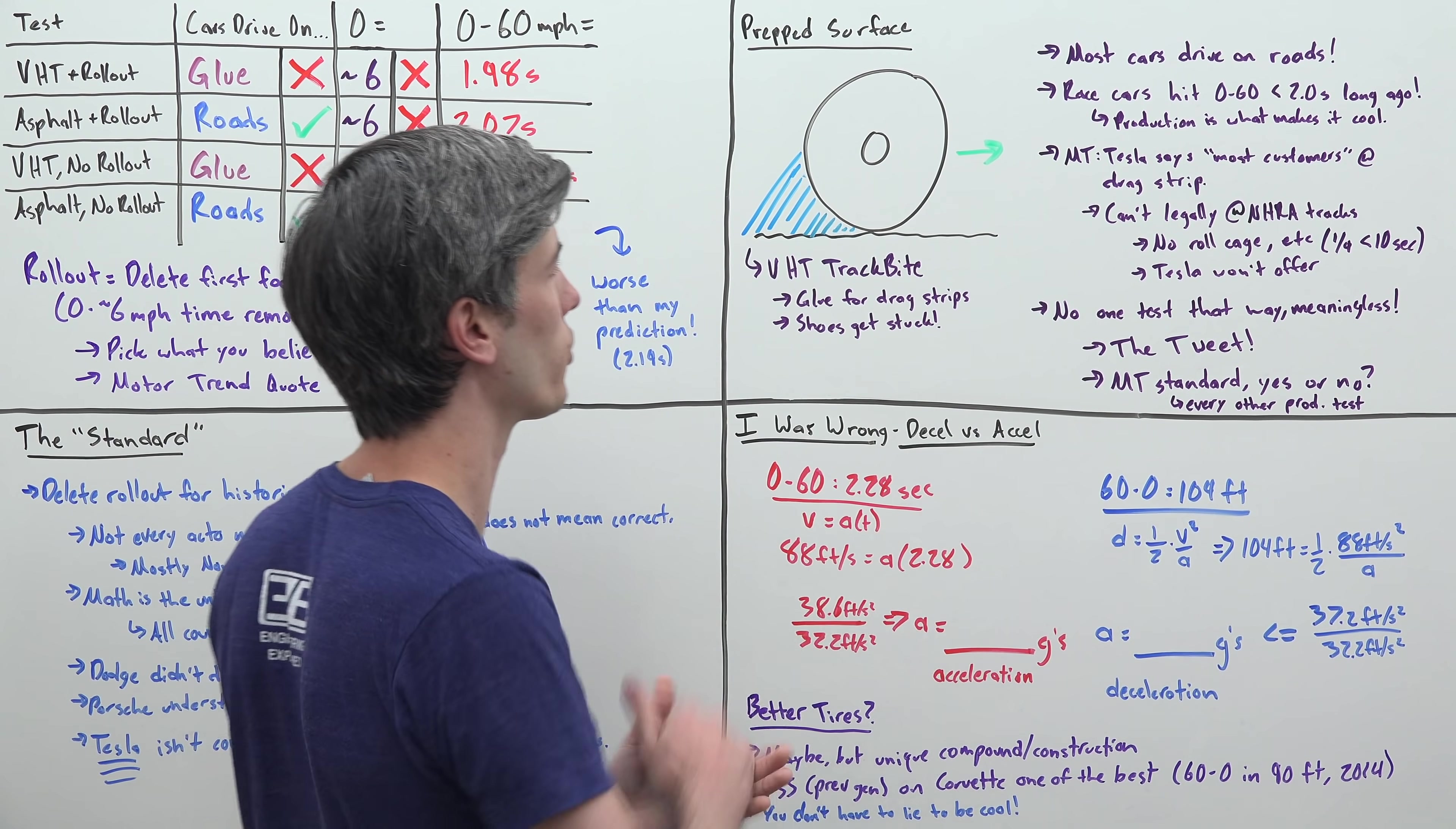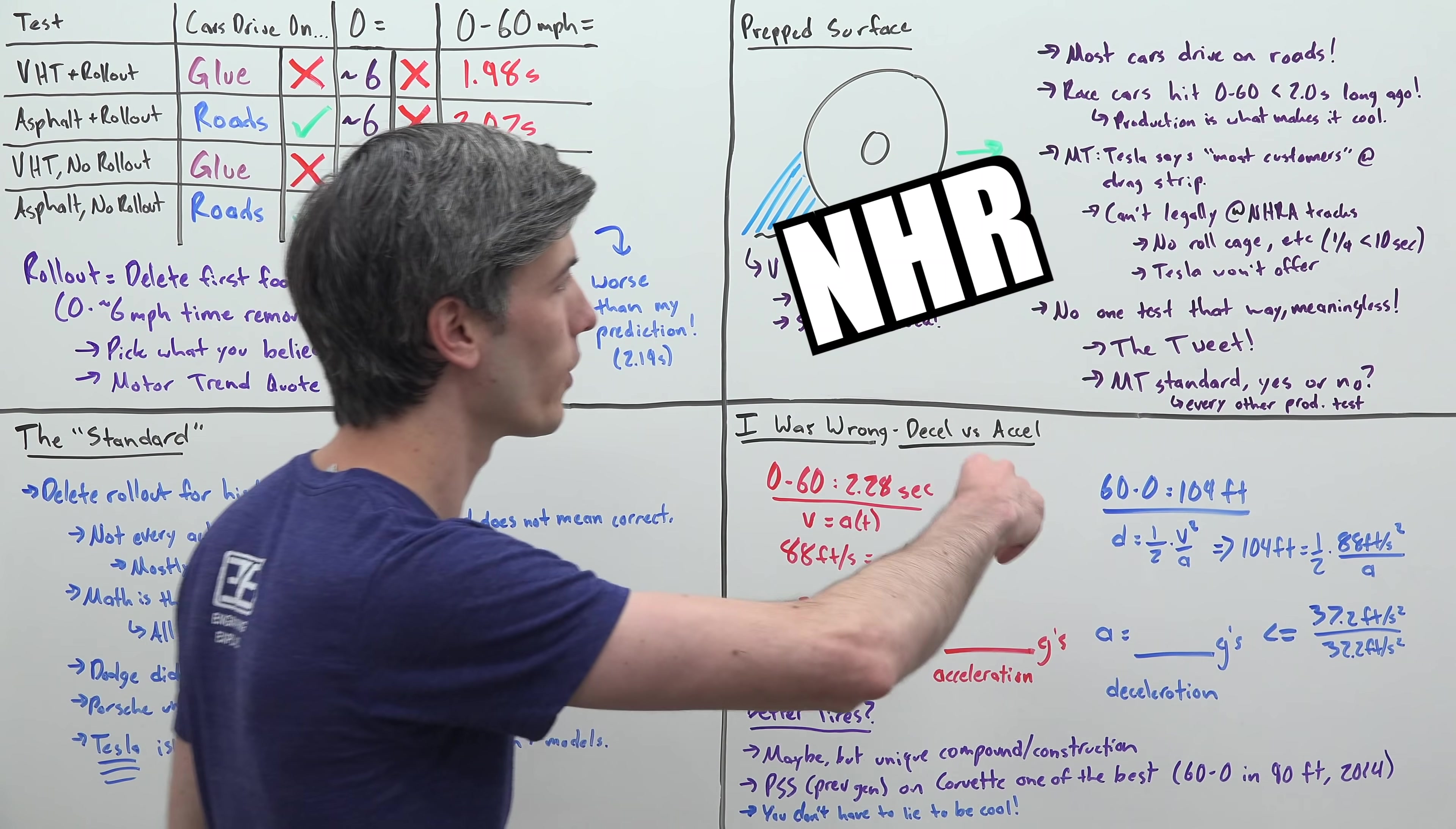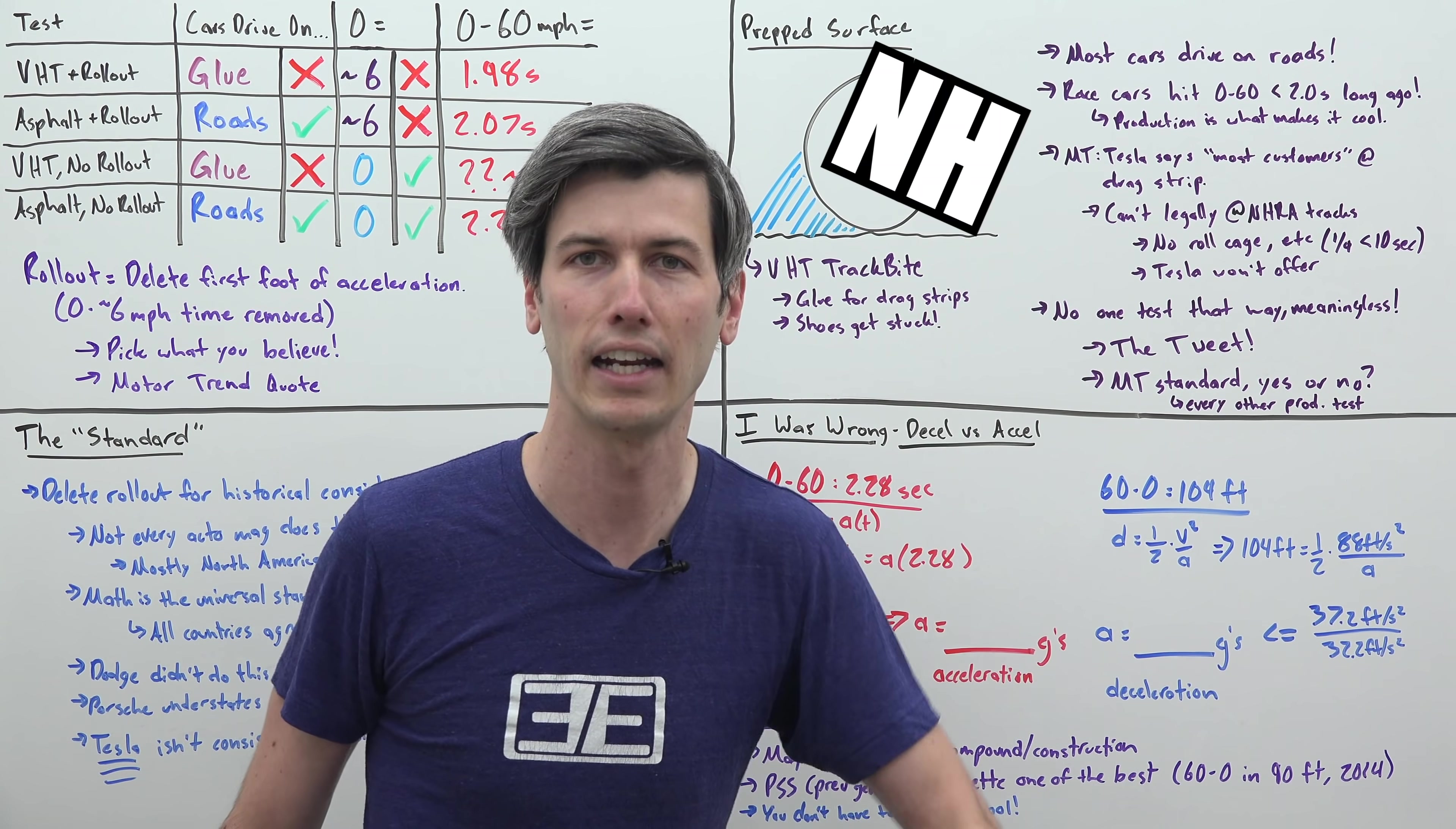Tesla says, according to Motor Trend, that they believe most of their customers will be driving these on the drag strip. The ironic thing is that's probably not going to happen because NHRA tracks don't allow you to drive cars without a full roll cage that have a quarter mile time of less than 10 seconds, which this absolutely does. Tesla's not going to offer all the things required for this thing to actually legally go down an NHRA track.